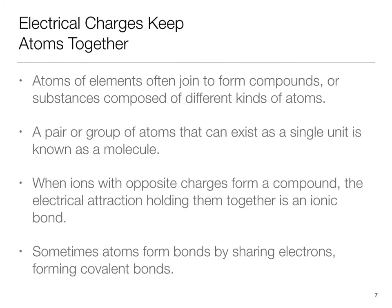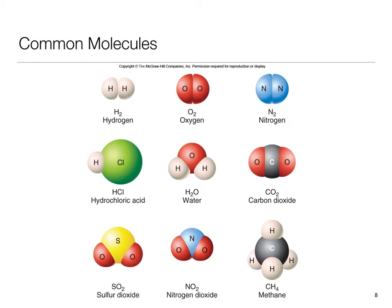Atoms often join to form compounds, or substances composed of different kinds of atoms. A pair or group of atoms that can exist as a single unit is known as a molecule. When ions with opposite charges form a compound, the electrical attraction holding them together is an ionic bond. Sometimes atoms form bonds by sharing electrons. For example, two hydrogen atoms can bond by sharing a single electron, orbiting the two hydrogen nuclei equally. Such electron-sharing bonds are known as covalent bonds. Carbon can form covalent bonds simultaneously with four other atoms, so carbon can create complex structures such as sugars and proteins.